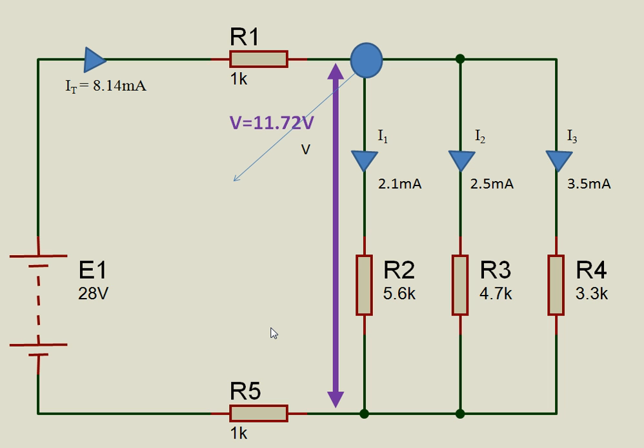Now, let's look at Kirchhoff's first law. He said that at a junction, the algebraic sum of the currents is equal to zero. So let's look at this junction here. The current flowing into the junction is 8.14 milliamps. And the current flowing out of the junction is I1, I2, and I3, which is 2.1 milliamps, 2.5 milliamps, and 3.5 milliamps.